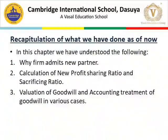Students, let's recapitulate what we have done in the previous classes. In the chapter, we have understood the following: why the firm admits a new partner, the calculation of new profit sharing ratio and the sacrificing ratio, and valuation of goodwill and accounting treatment of goodwill in various cases.